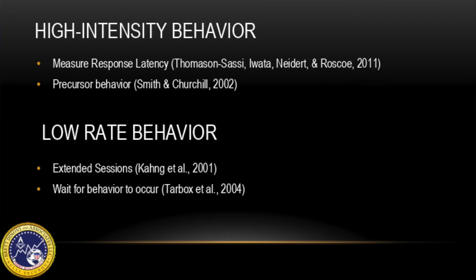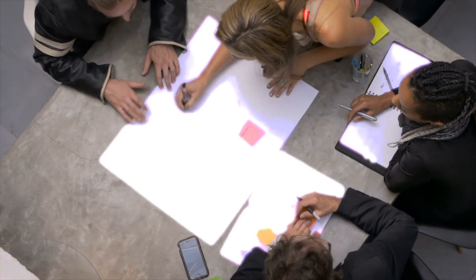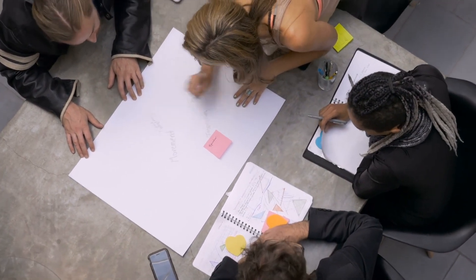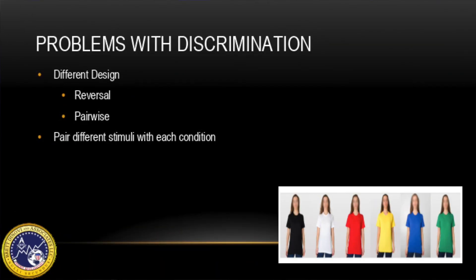For concerns about high-intensity behaviors, researchers have looked at measuring response latency or precursor behaviors. If behaviors occur infrequently, you can extend your sessions or wait for the behavior to occur. For concerns about an individual not discriminating between conditions, options include changing your design using a reversal or pairwise approach, associating conditions with different rooms, different therapists, or different stimuli — such as everyone wearing blue during the escape condition.